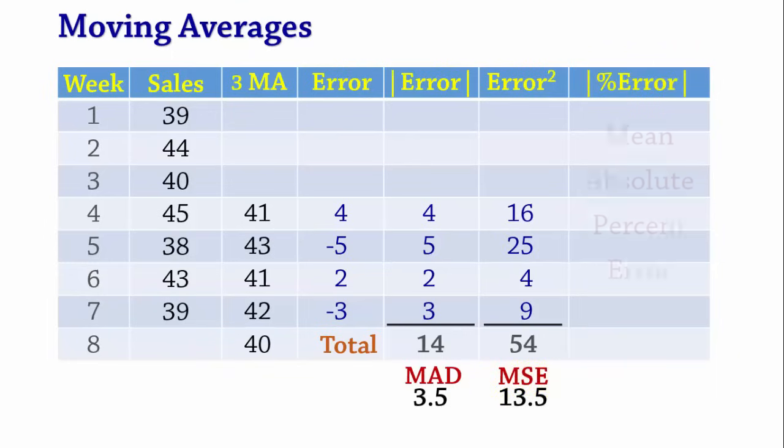Finally, let us calculate the mean absolute percent error. The absolute percent error is a measure of the error as a percentage of actual values. To obtain the absolute percent error, we simply divide the absolute errors by the actual sales values and multiply by 100%.